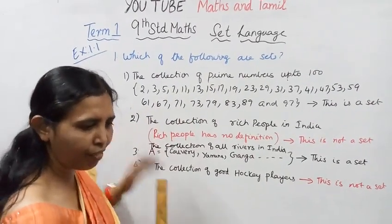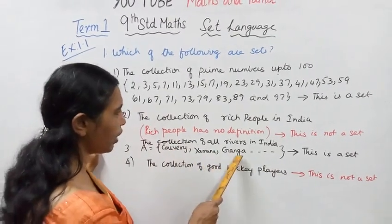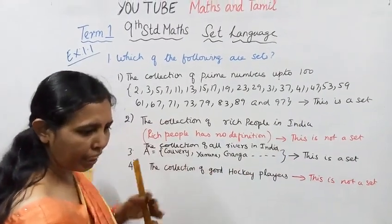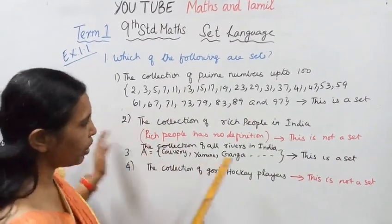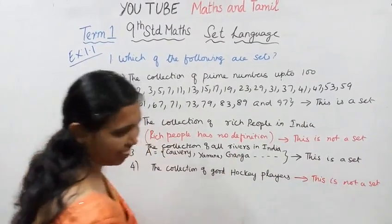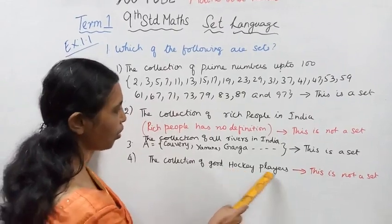The collection of all rivers in India. Rivers like Yamuna, Ganga - we can name all the rivers in India. This is well-defined. Therefore, this is a set.